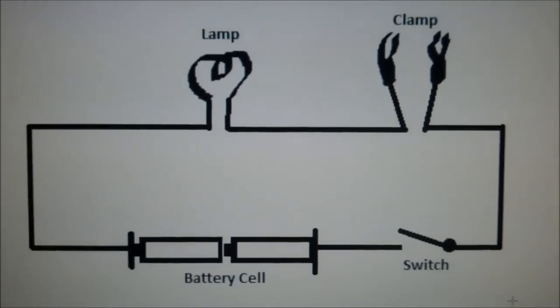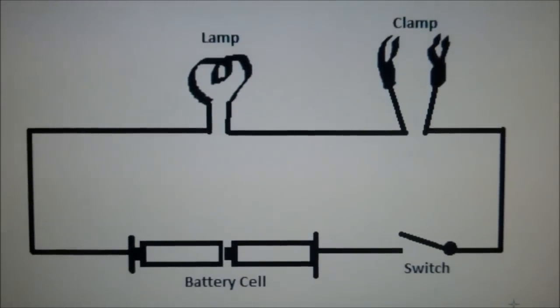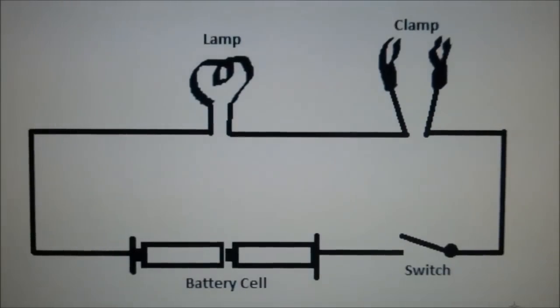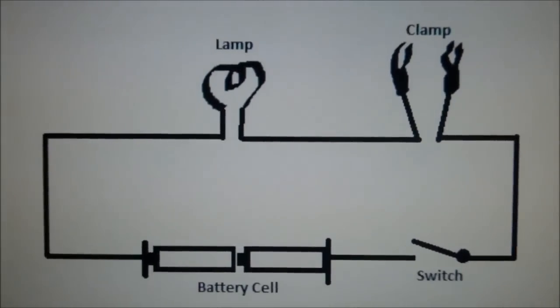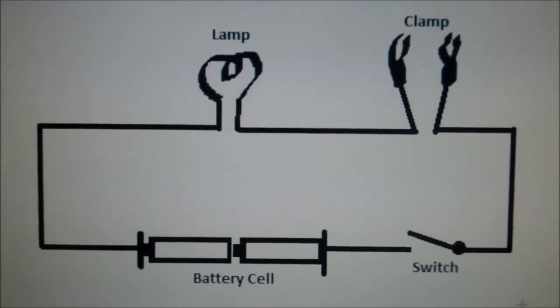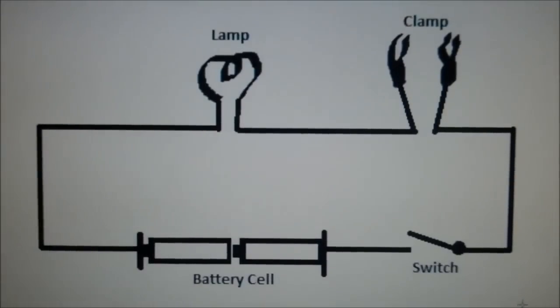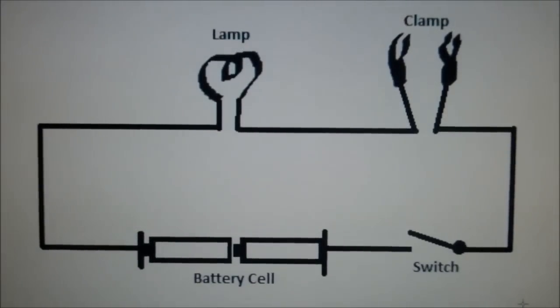You place different materials between the clamps to find out which materials conduct electricity. Conductors will allow the lamp to glow. Some materials don't conduct electricity and the lamp won't turn on.